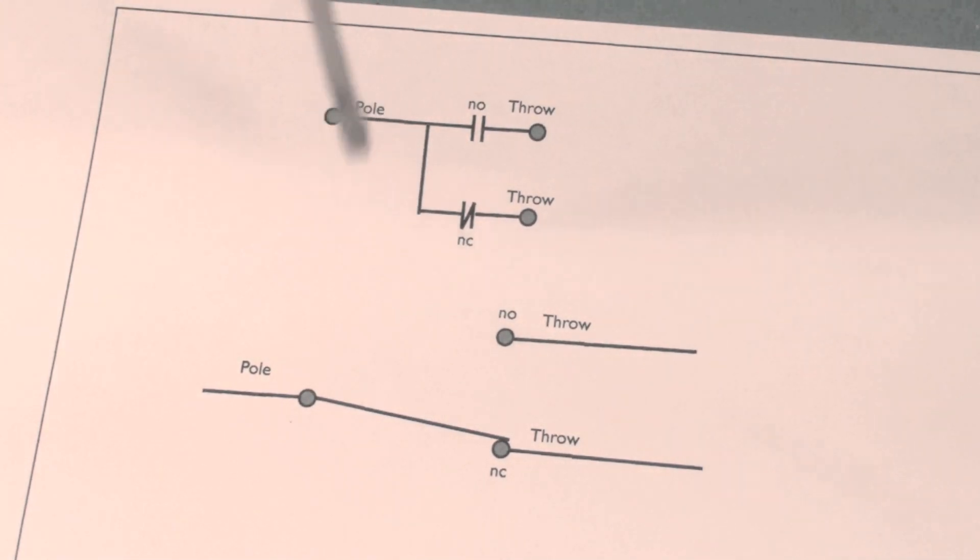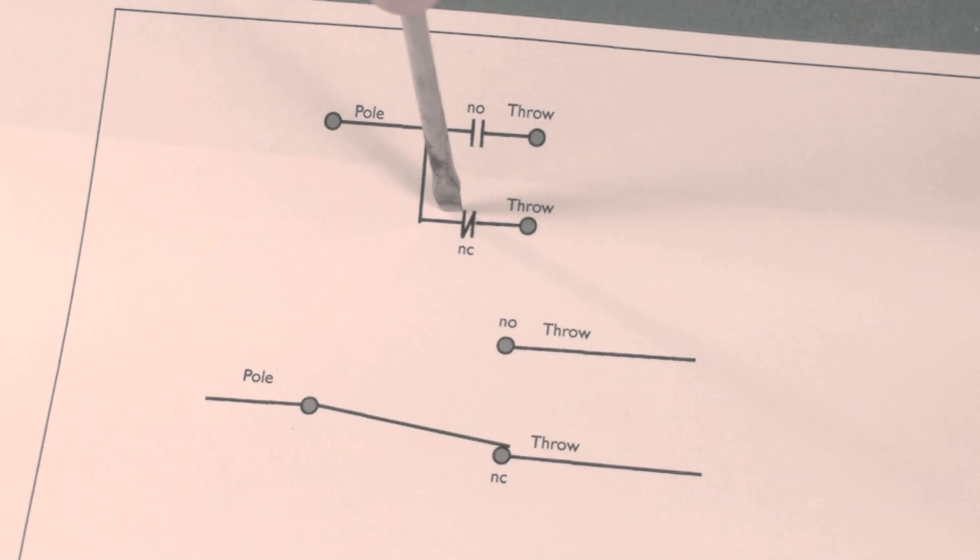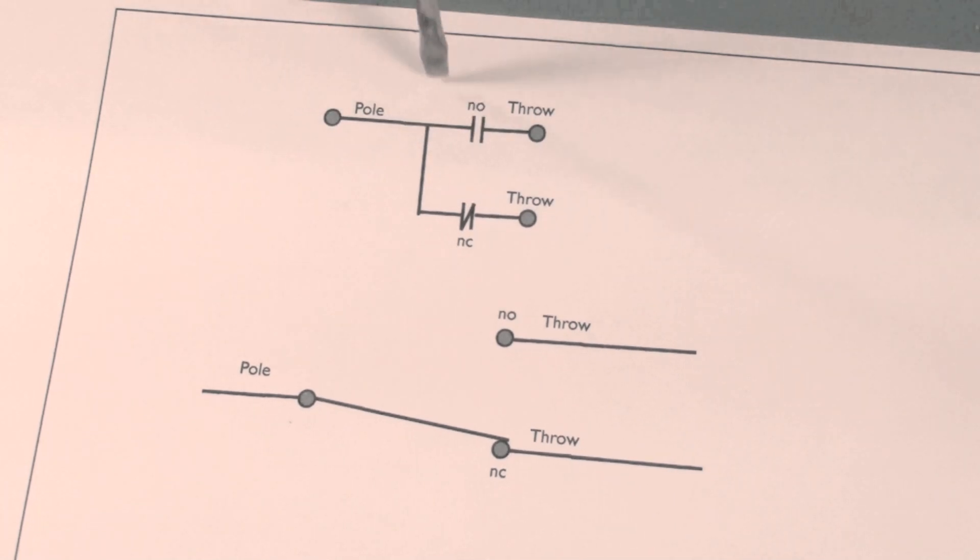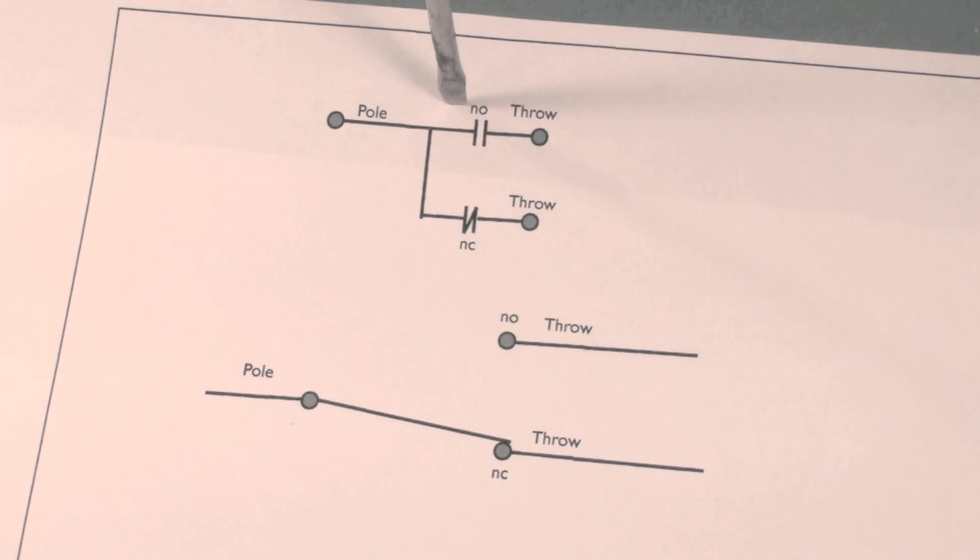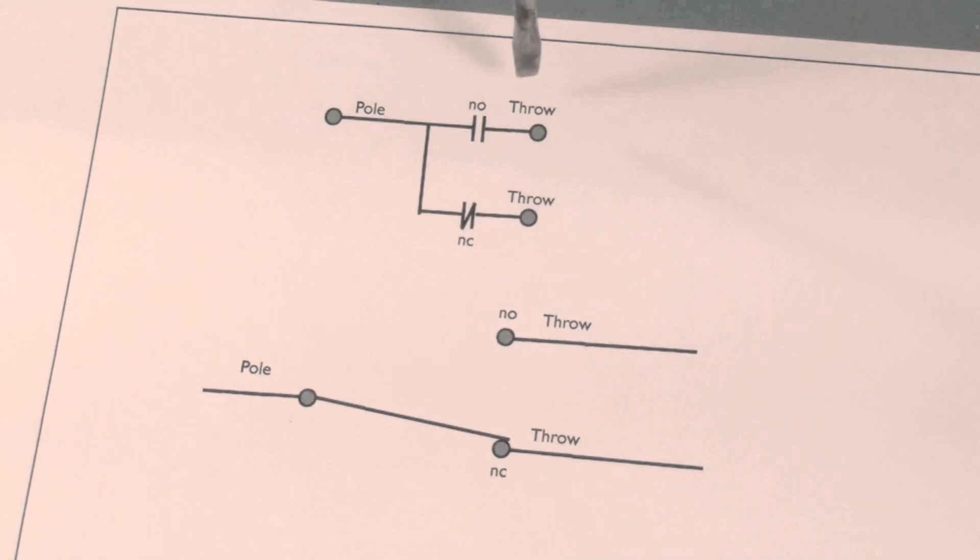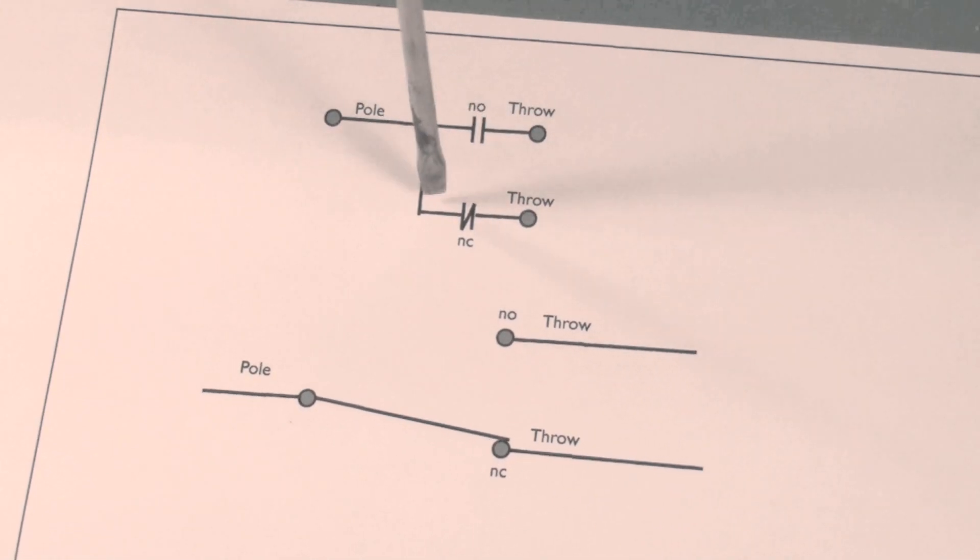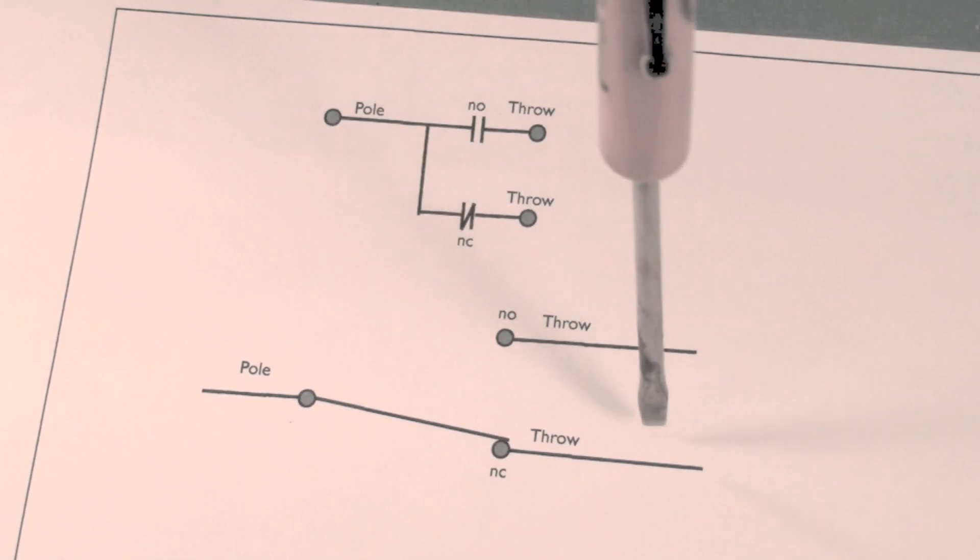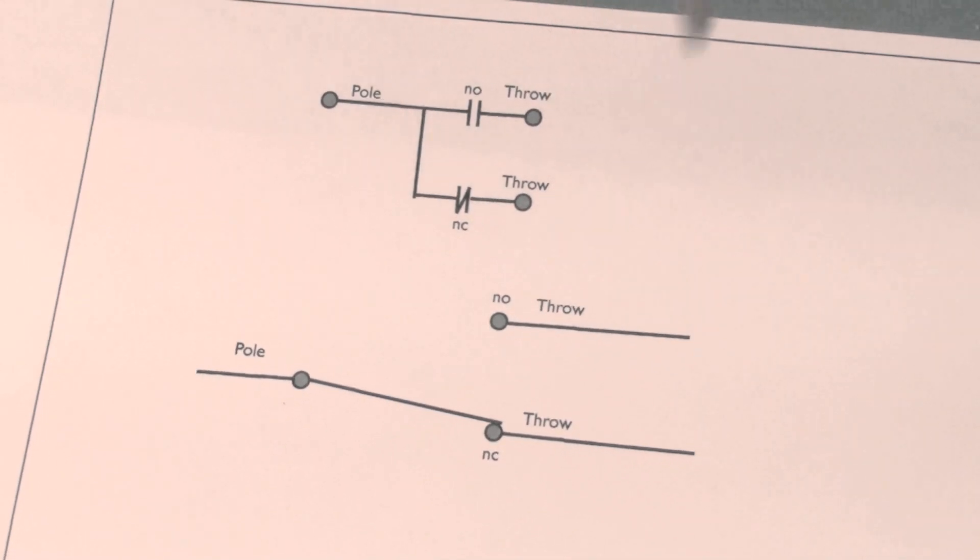This one up here shows a set of normally closed contacts there and normally open contacts there. So this is a normally open throw, this is a normally closed throw.